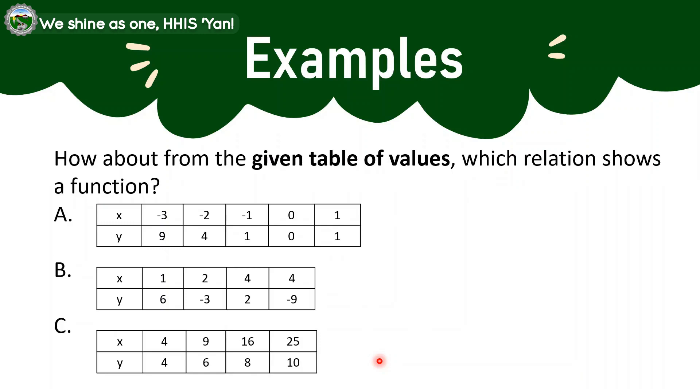Let us proceed to examples when the given are the table of values. Let us also identify in here which are said to be functions and not functions. Here, example A. In this example, we have in here the domain, which is negative 3, the set of numbers from negative 3, negative 2, negative 1, 0, and 1. So none of that is repeated. Hence, that is a function.